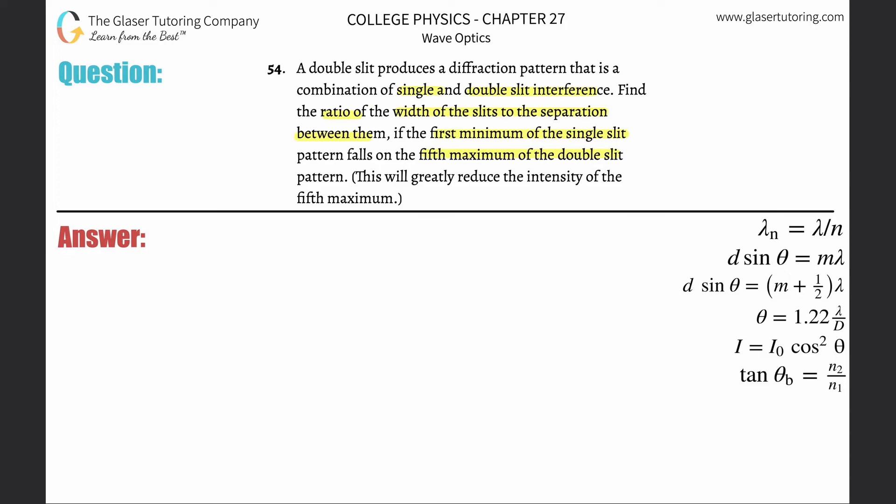Basically, this formula here describes the minimum patterns for single slits, and it also describes the maximum patterns for double slits. In other words, I'm going to create two equations here. Let's call this the distance between the single slit, so we'll put a little S there, multiplied by the sine of the angle, will be equal to the order.